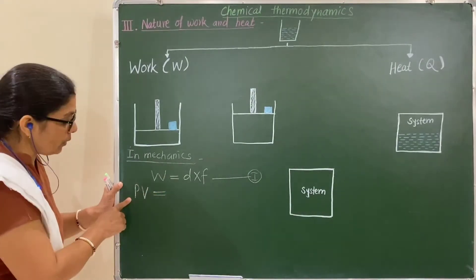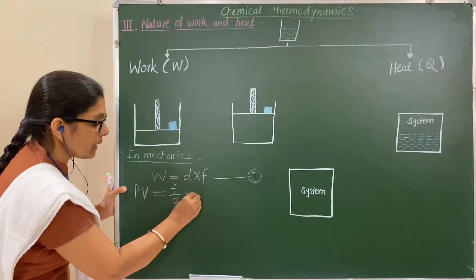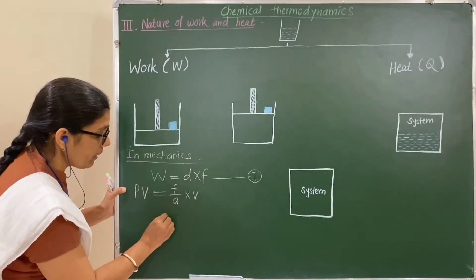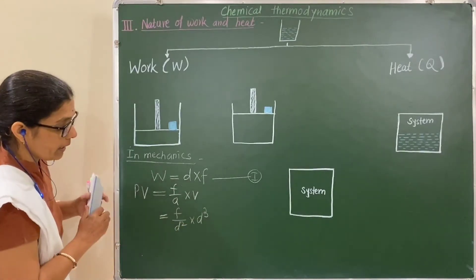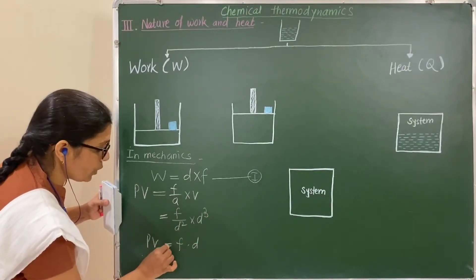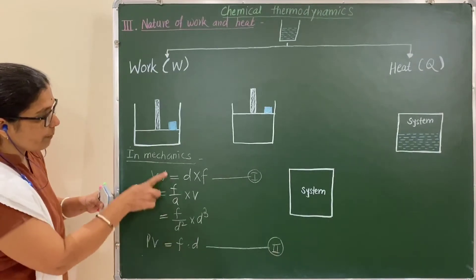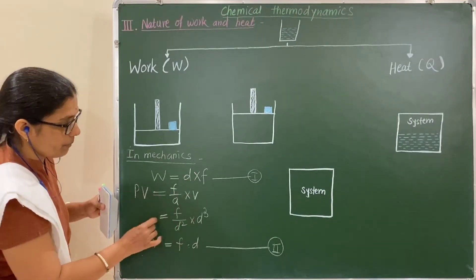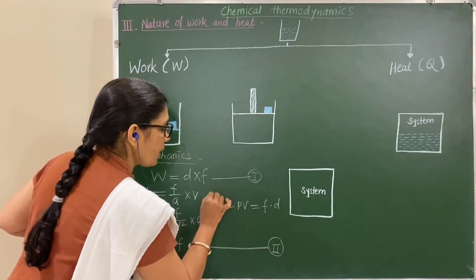Substituting the values: pressure P is force per unit area. Suppose the distance is d, then the area is d² and volume is d³. These cancel, and F × d gives us PV = F × d. Comparing the two equations — in mechanics W = F × d, and in thermodynamics PV = F × d — all are the same.